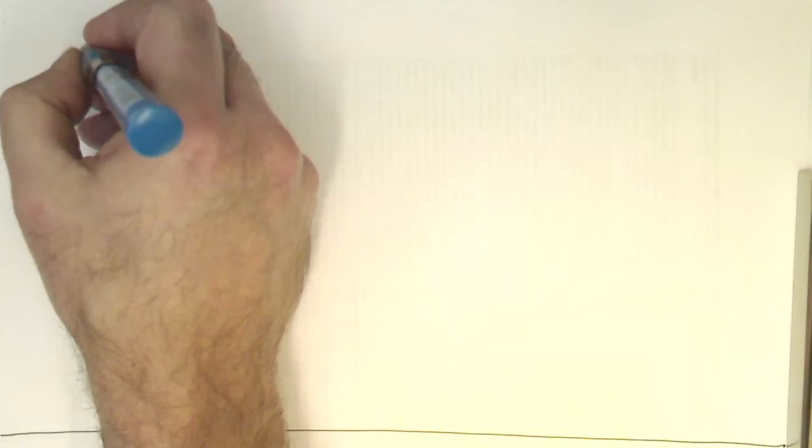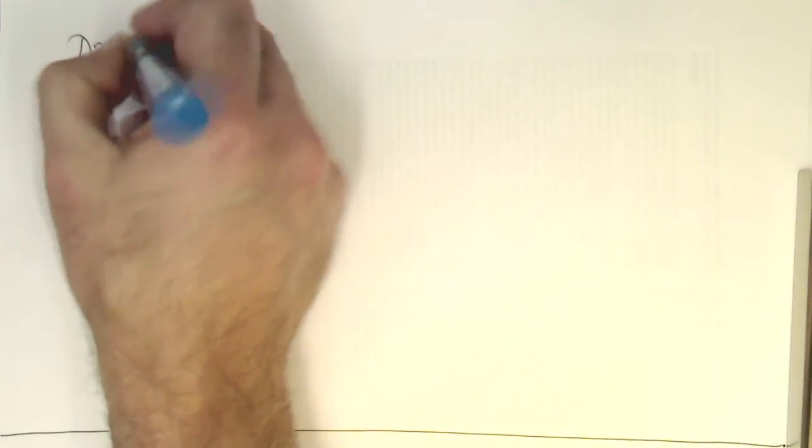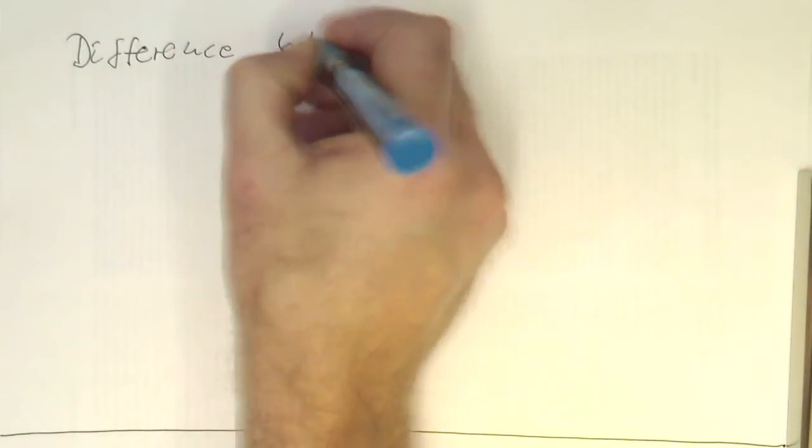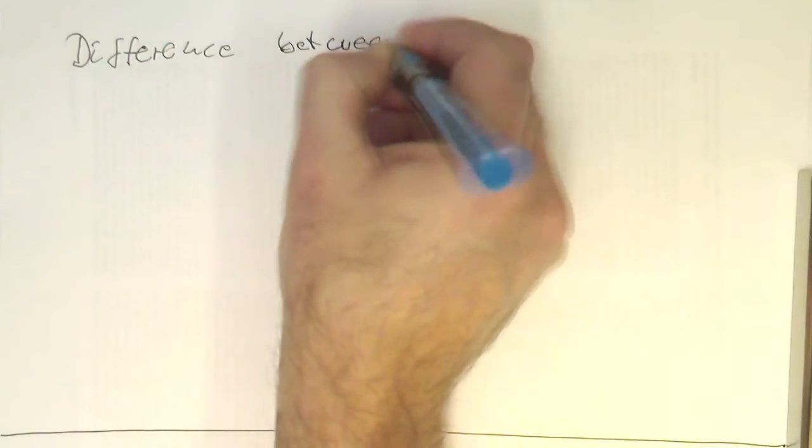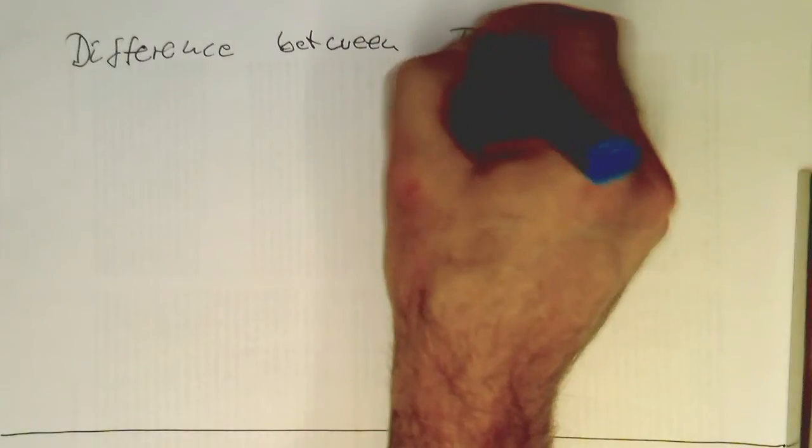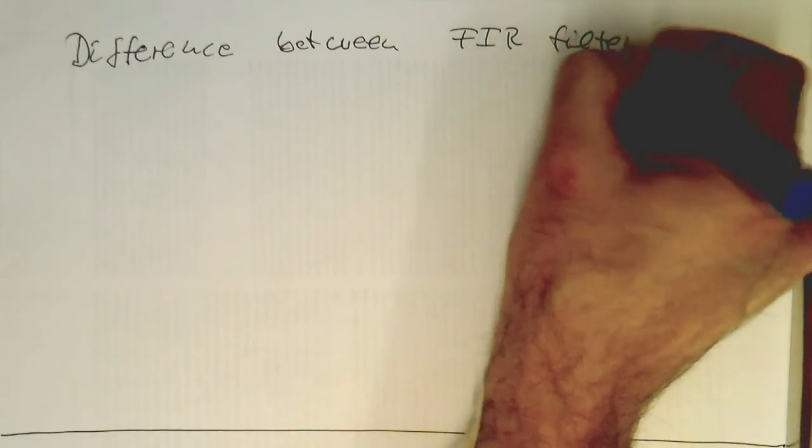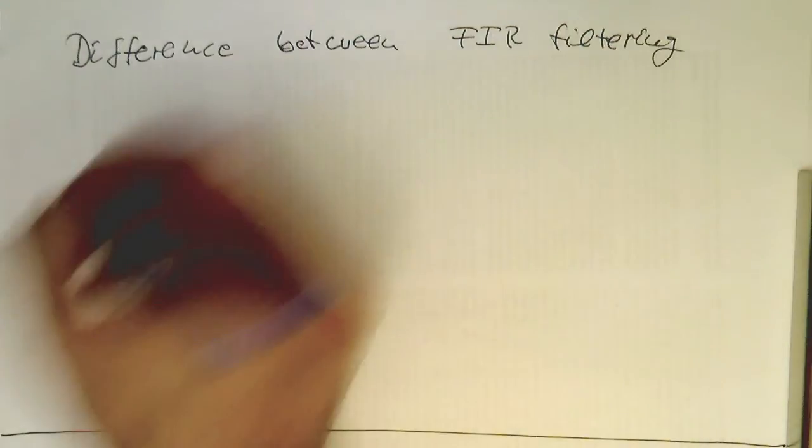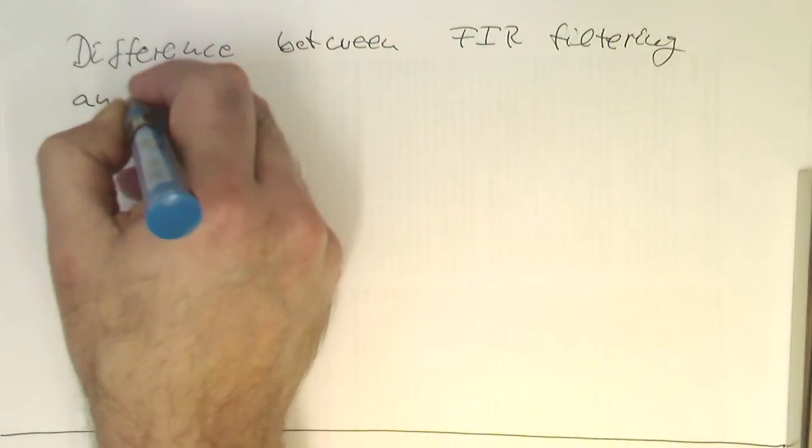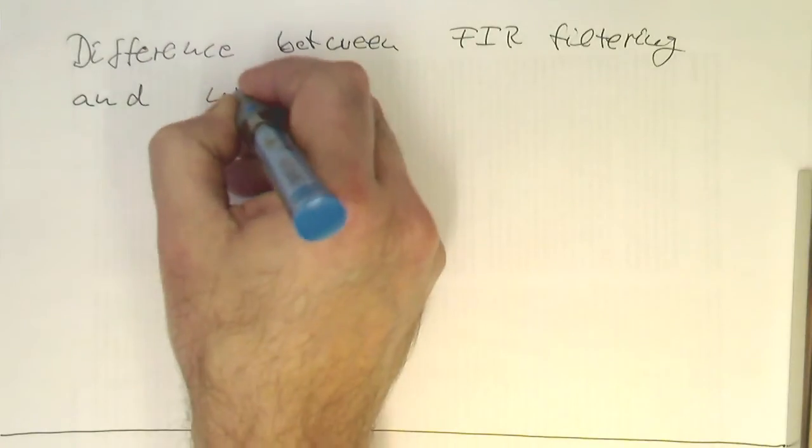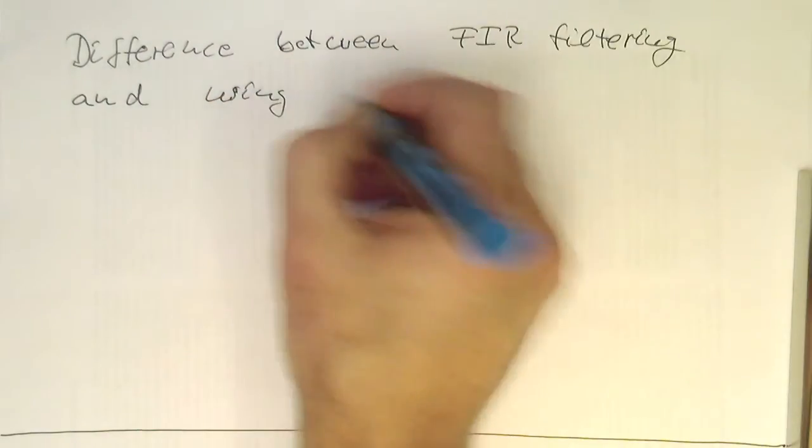So what's the difference between FIR filtering and using the Fourier transform?